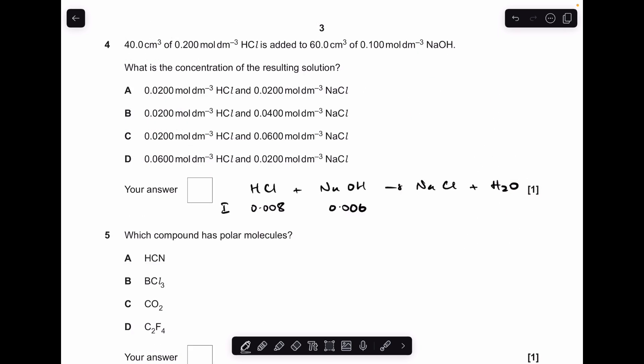Number 4. So the equation for reaction, straightforward, HCl plus NaOH gives NaCl and H2O. So the initial moles of acid is concentration times volume, so 0.008, and alkali likewise, concentration times volume, 0.006. So at the end of the reaction, the final moles, well, acid's in excess, so there'll be a little bit of that left over. So it's the difference between the two moles of reactants. So 0.002 moles of HCl remain, and we're making 0.006 moles of NaCl because of the one-to-one ratio with the NaOH.